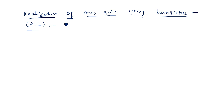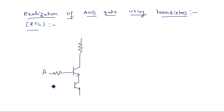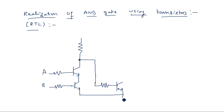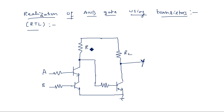RTL is nothing but resistor transistor logic, where we use resistors and transistors to design the circuit for AND gate. Two transistors T1 and T2 are connected in series. Input A is applied to T1 and input B to T2. The output of this series combination is connected to the input of another transistor T3. If T3 were not there, it would act as a NAND gate because the transistor inverts the output. The output Y is taken from T3, and R1 and R2 are connected to plus VCC (+5 volts).